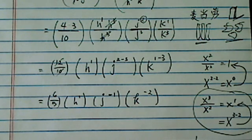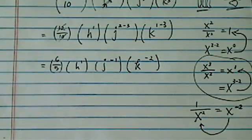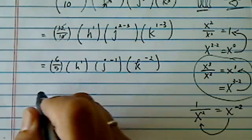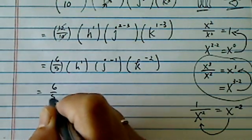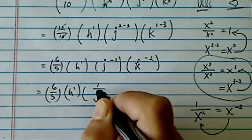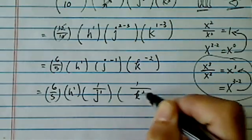And one other thing that's really important is this. If you have X to the minus the exponent, it's equal to one over X to the positive exponent. So X to the minus two equals one over X to the positive two. So I have H to the one, and then this is one over J to the one, and then one over K squared.